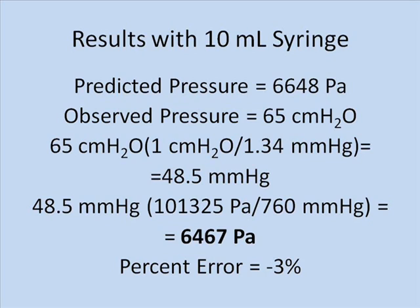The results of this experiment are also quite good. Using the same method as before, we would predict that a 100 gram mass would generate a pressure inside the syringe equal to 6,648 pascals. We observed a pressure change in the barometer equal to 65 centimeters of water, which after conversion factors gives us 6,467 pascals — so our experiment has only a negative 3% error.